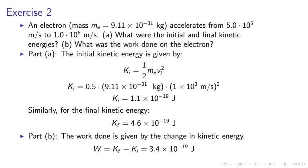Part B. The work done is given by the change in kinetic energy. Work equals KF minus Ki equals 3.4 times 10 to the minus 19 joules.